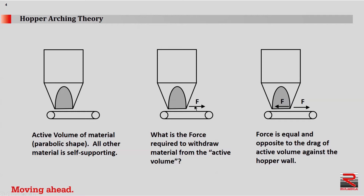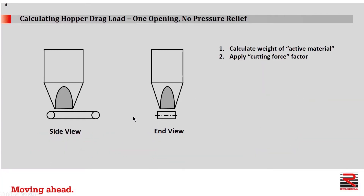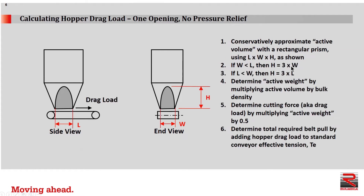What is the force required to overcome this amount of active material? The way to calculate the drag is by calculating the amount of active material and applying a cutting force vector. We can define our active zone by considering its length, the length of the hopper opening, and its width, called L and W in this example. We can conservatively approximate the active volume with a rectangular prism rather than attempting to calculate a parabolic shape.